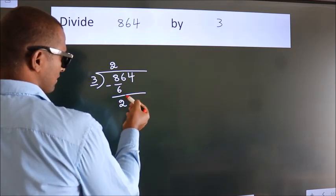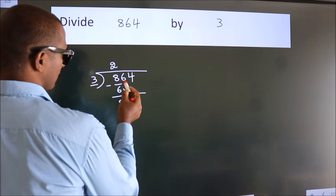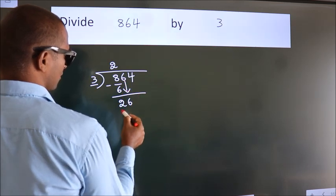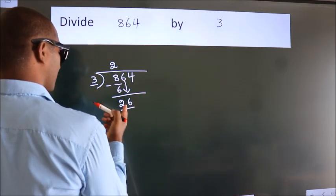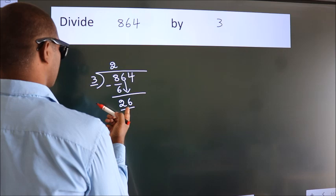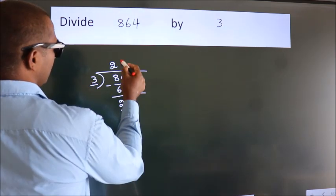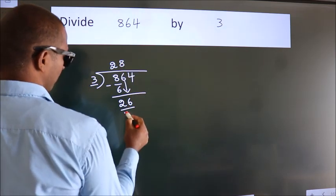After this, bring down the upside number. So, 6 down. So, 26. A number close to 26 in 3 table is 3 8s, 24.